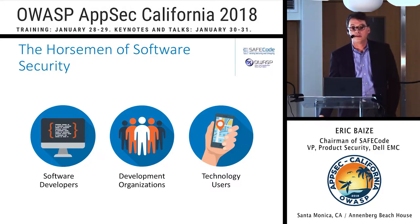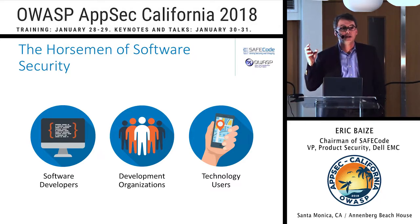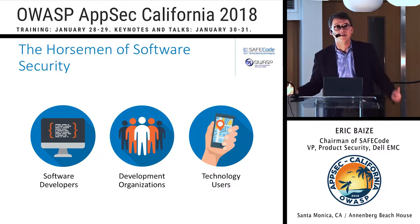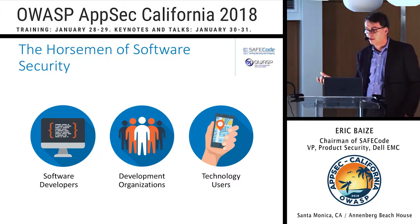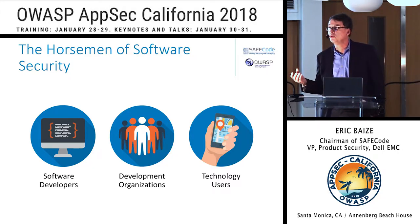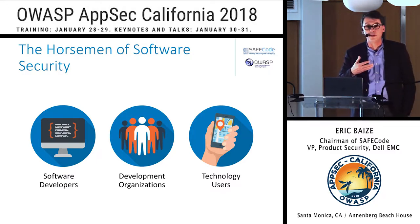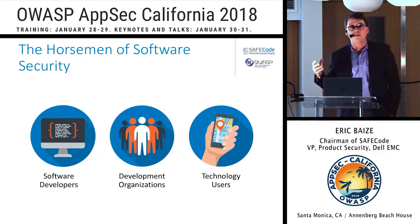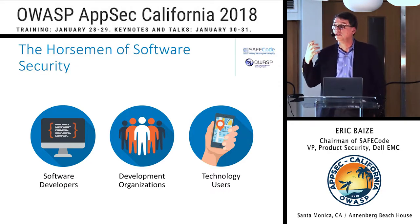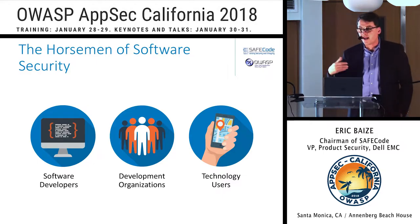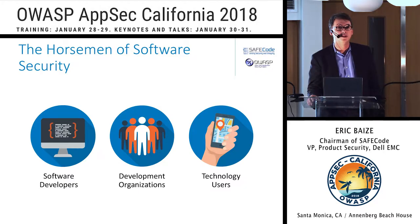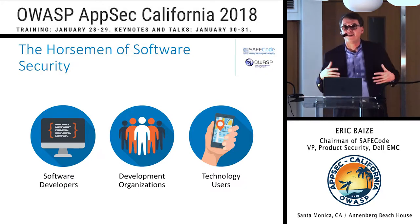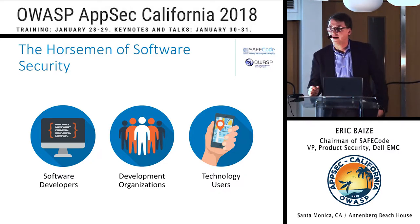The second stakeholder is the development organization — the organization that takes the code and turns it into a product or a service. It could be a cloud service, a packaged product, or an internal business-enabling application. And then the third stakeholder is the technology user. It could be my mom using her tablet, or a multi-billion-dollar organization dealing with billions of transactions every day. There's always a technology user buying these products and services, and that user has huge influence on the market.